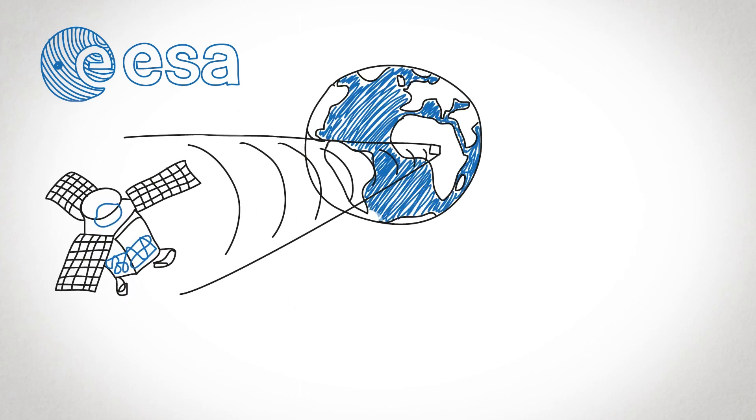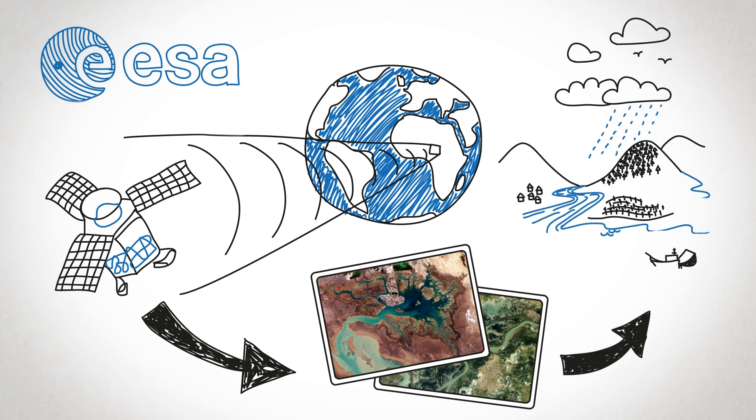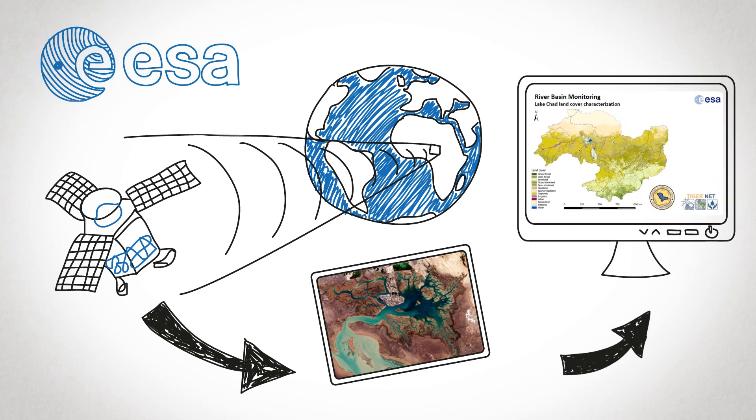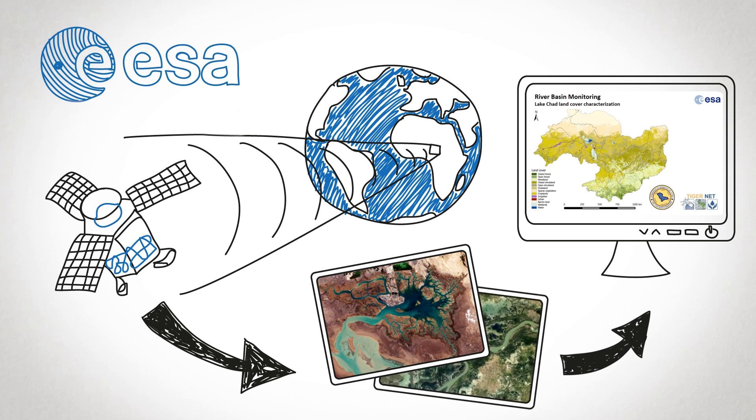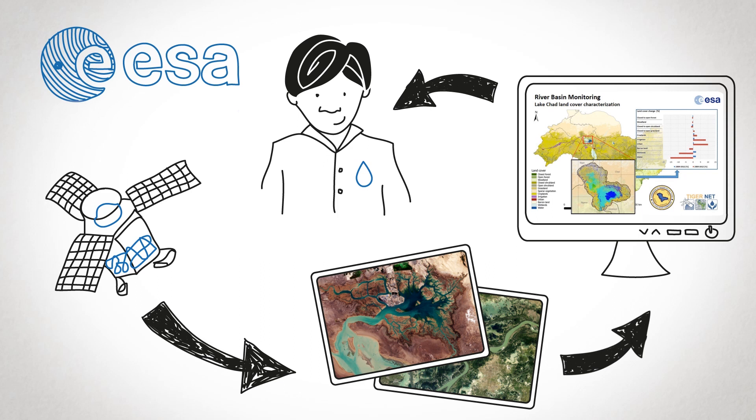This is where the European Space Agency and its satellite Earth observation can bridge important information gaps, providing timely and objective monitoring of many components of the water cycle. A single satellite image has the potential to deliver reliable information on large areas. Using these images, models and tools can be developed to provide water managers with the data they need.